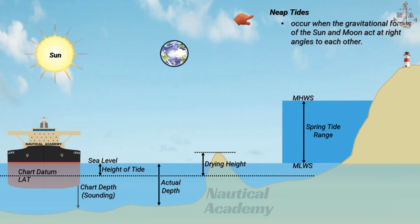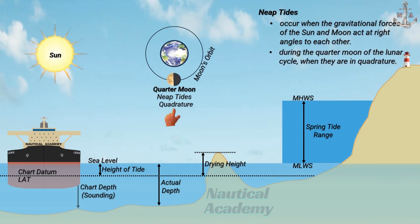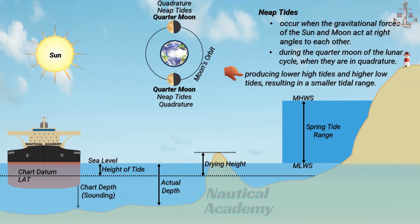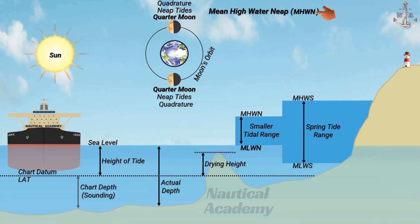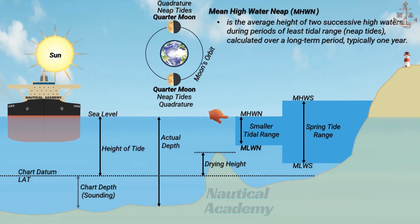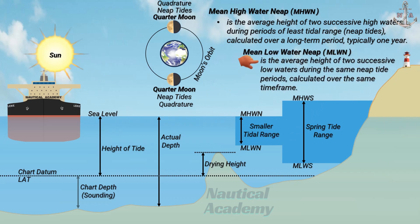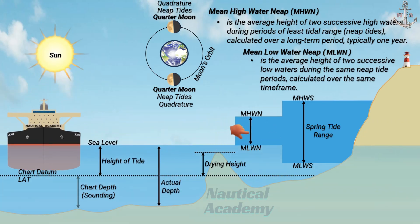In contrast, neap tides occur when the gravitational forces of the Sun and Moon act at right angles to each other, during the quarter moon of the lunar cycle. This misalignment reduces the overall gravitational pull on Earth's oceans, producing lower high tides and higher low tides, resulting in the smallest tidal range. The mean high water neap is the average height of two successive high waters during periods of least tidal range, calculated over a long-term period, typically one year. Similarly, the mean low water neap is the average height of two successive low waters during those same neap-tide periods. The difference in height between mean high water neap and mean low water neap is called the neap-tide range.